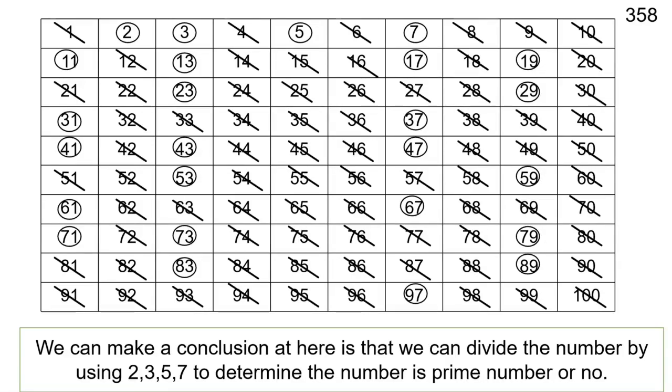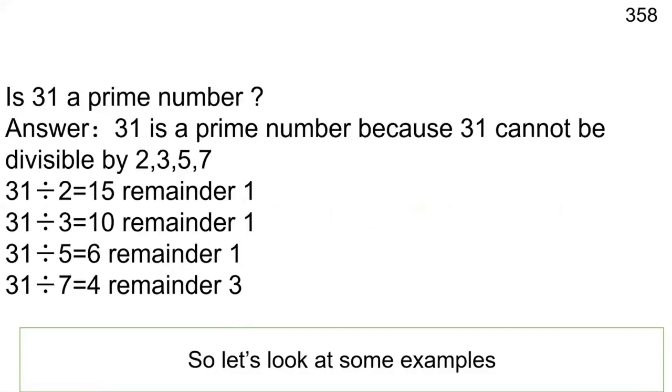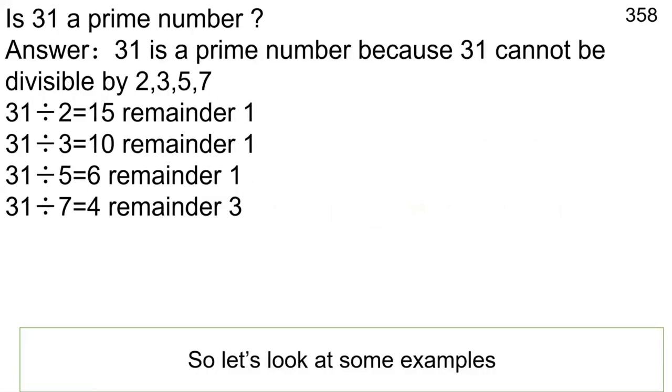We can make a conclusion here that we can divide the number by using 2, 3, 5, 7 to determine if the number is prime number or no. So let's look at some examples. Is 31 a prime number?